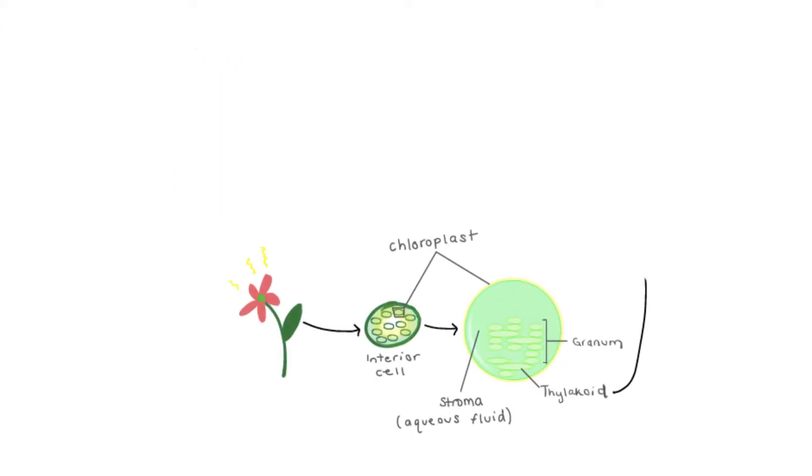Light from the sun initiates photosynthesis in plants, which is turned into energy. This light energy is then absorbed by the plant in its chloroplasts. Inside the chloroplasts there are stroma, thylakoid, and granum.